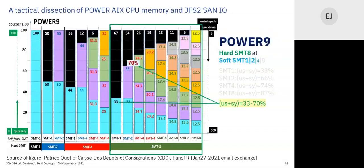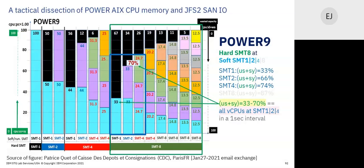The user plus system range 33 to 70 is special at SMT8: big bold SMT1 and SMT2, and a small SMT4. I say you tune your count of virtual CPUs to run mostly at 33 to 70, because therefore you're exploiting SMT1, SMT2, and some SMT4 — and it is a responsive range for executing OLTP threads. You can boot SMT8 and adjust your virtual CPUs to run in this range, or you can boot hard SMT4 and you're always in that range.